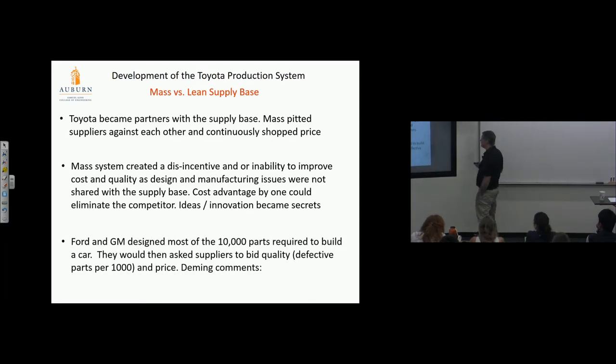Ford and GM designed most of the 10,000 parts required to build a car, then asked suppliers to bid quality—defective parts per thousand—and price. Just a handful of smart people at GM came up with the design. The entire supply base with all their expertise had no say—they just quoted a price. What's that do for the quality of design or even the cost of the product being produced? They can't be innovative in how they produce it in terms of cost and quality. You cut off 80, 90 percent of the entire process of making a car from thinking and put it in the hands of only a few at the top.